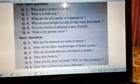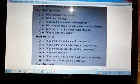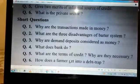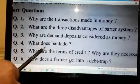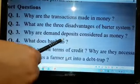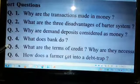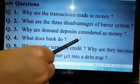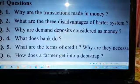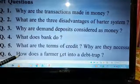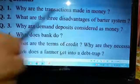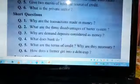Short question number four: what does a bank do? In simple words, here you will write the functions of the bank. Question number five: what are the terms of credit and why are they necessary? Question number six: how does a farmer get into a debt trap?